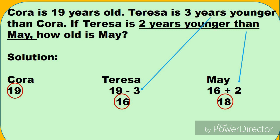Teresa is 3 years younger than Cora. So mas bata ng tatlong taon si Teresa kay Cora. So kung si Cora ay 19, magbabawas tayo ng tatlong taon. So 19 minus 3, si Teresa ay 16. If Teresa is 2 years younger than May, so mas matanda si May kaysa kay Teresa ng dalawang taon. Ilang taon si May? So kung si Teresa ay 16, mag-a-add lang tayo ng dalawa doon kay May. 16 plus 2, the answer is 18. So ang sagot dito is, how old is May? The answer is 18.